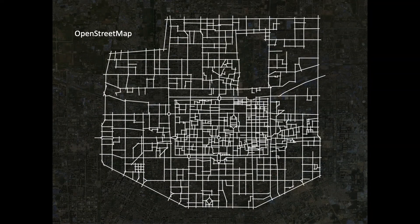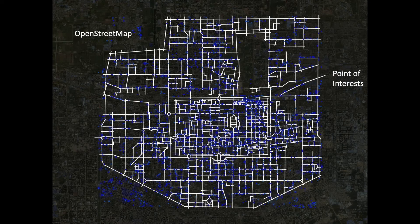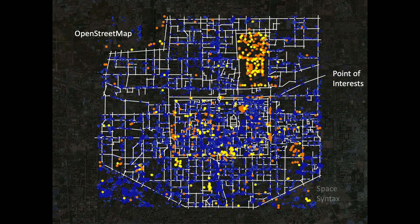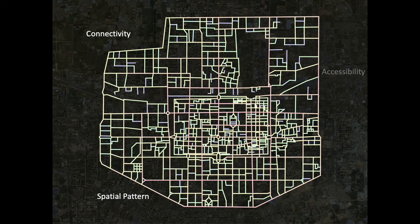Here we are looking at the city of Xi'an in China. By looking at the gradient colorful pattern, we can understand the complicated nature of the city.